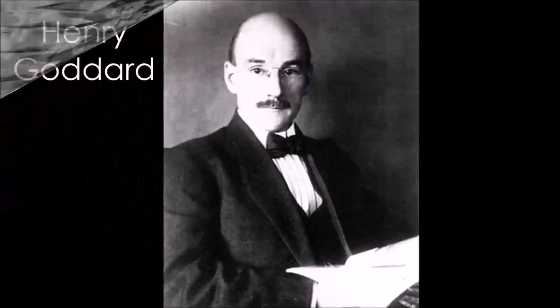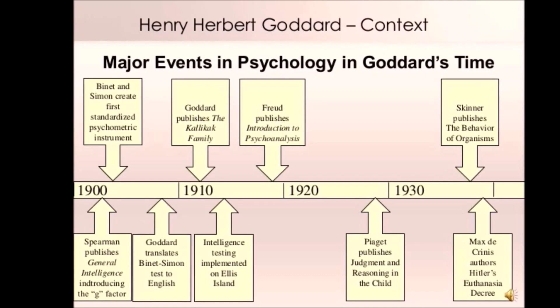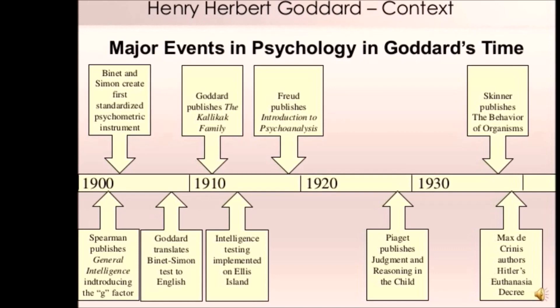Henry Goddard was also a eugenicist. In 1908, he published his own version of the Simon-Binet IQ test. He called his version the Binet and Simon test of intellectual capacity, and cordially promoted the test. He quickly extended the use of the scale to public schools in 1913, to immigration in 1914, and to a court of law in 1914.